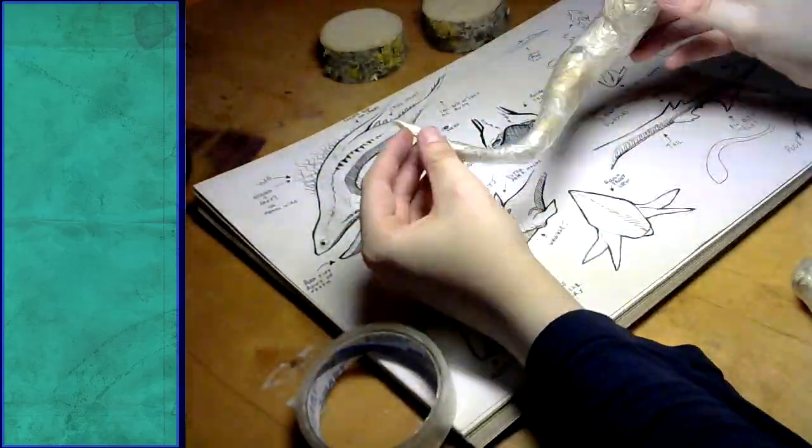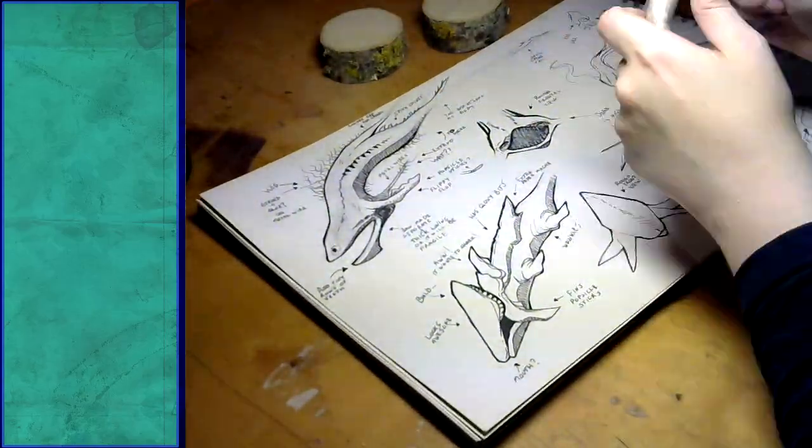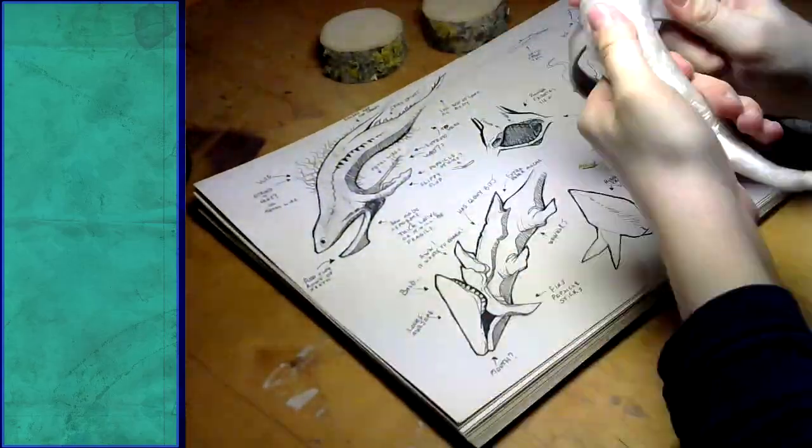If the end result seems lumpy, you can always apply tape around the object and pull it really hard. It will flatten out any lumps and then you can add more paper to even it out.